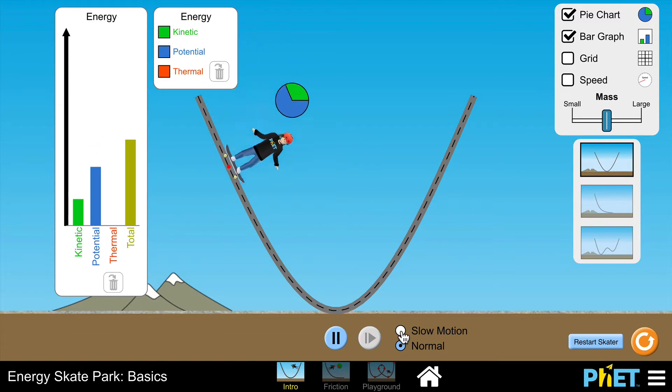So if I slow them down and then stop them at maximum height, that is where they would possess all potential energy. And you can see the pie chart is all blue, all potential, and the same we can see here on the bar chart.